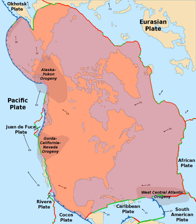With an area of 76 million square kilometers (29 million square miles), it is the Earth's second largest tectonic plate, behind the Pacific Plate, which borders the plate to the west. It extends eastward to the Mid-Atlantic Ridge and westward to the Chersky Range in eastern Siberia. The plate includes both continental and oceanic crust.